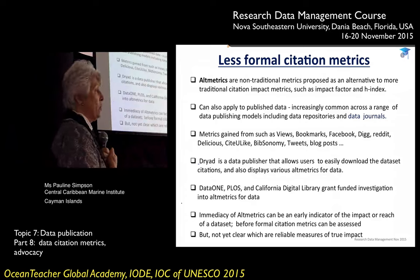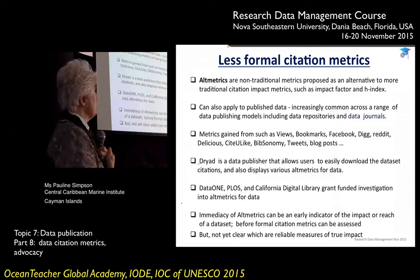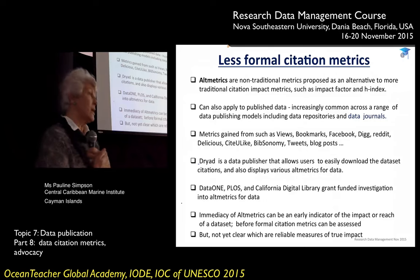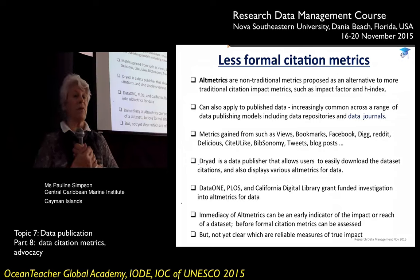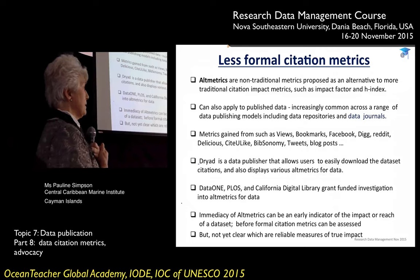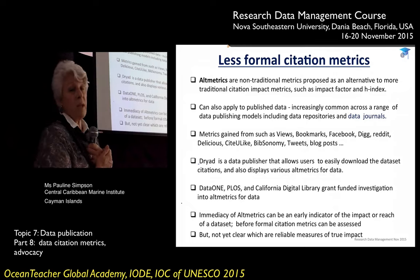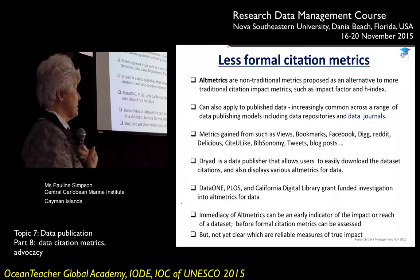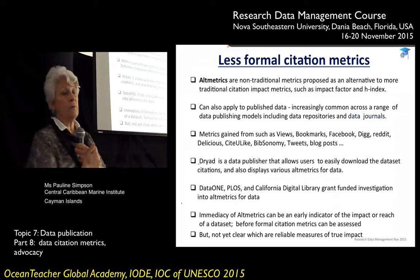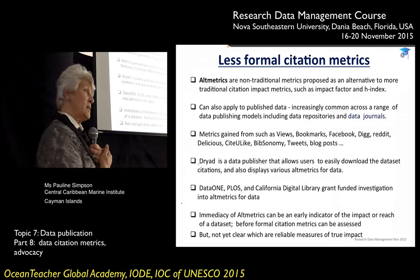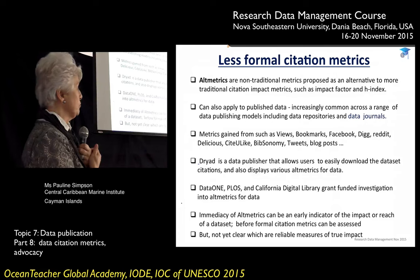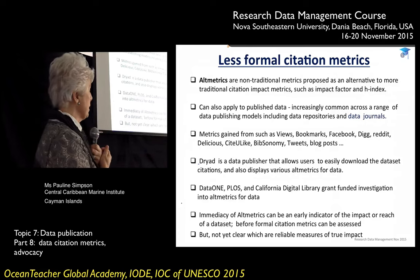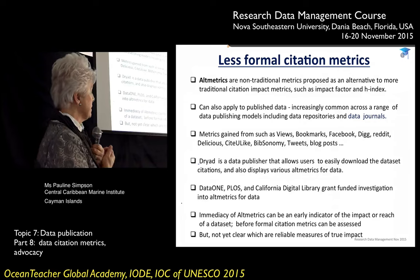What is different about altmetrics is that the metrics are gained from things like views, bookmarks, Facebook likes, CiteULike, tweets, blog posts, Delicious, etc. — it's coming from social media products rather than very formal citation products. Dryad repository, data publishers, and Data One and Plus, and the California Digital Library have been funded to investigate altmetrics for data, so there's work going on. We're going to start seeing more applications and products being offered to provide data citation metrics.